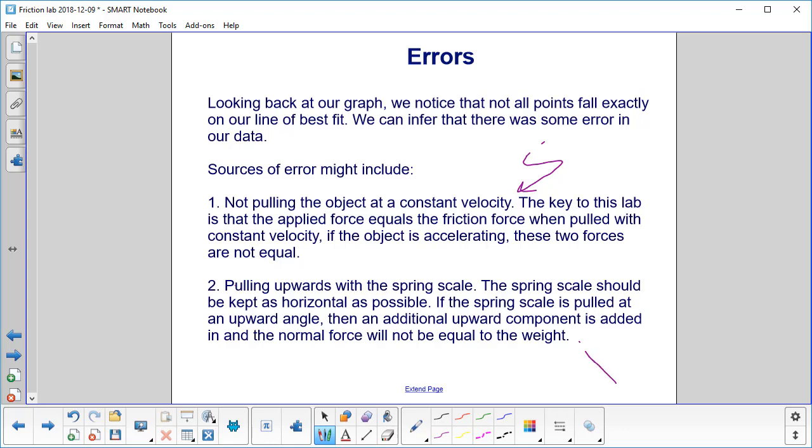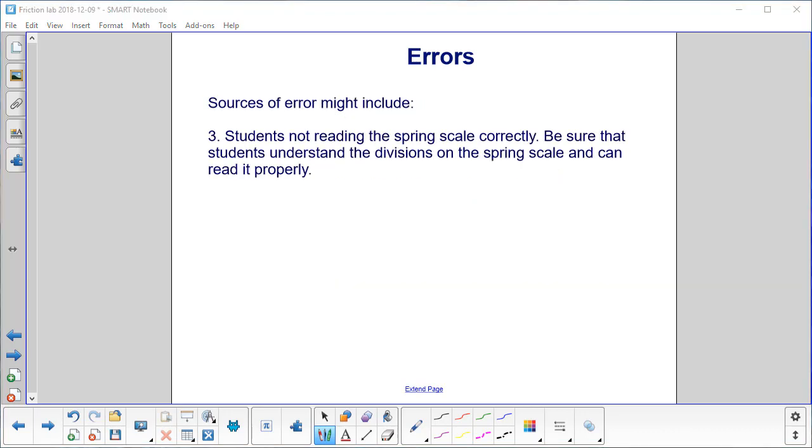Or we pulled upwards with the spring scale. The spring scale should be kept as horizontal as possible. If it is pulled in an upward angle, then an additional upward component is added, and the normal force will not be equal to the weight. Students might not be reading the spring scale correctly. Be sure that they understand the divisions on the spring scale and can read it properly, and have them show that to you before they do the lab just to make sure. This is a preventable error. You shouldn't list that as a source of error on your report.